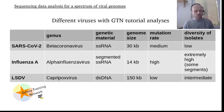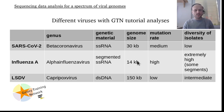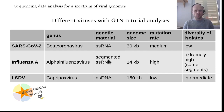Influenza A lacks proofreading activity and consequently has a high mutation rate. Its genome is only about half the size of SARS-CoV-2, but more importantly, while it's also a single-stranded RNA genome, it comes as eight separate so-called segments of RNA, which has major implications for the diversity of Influenza A virus isolates.